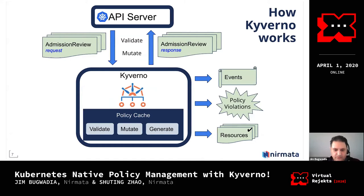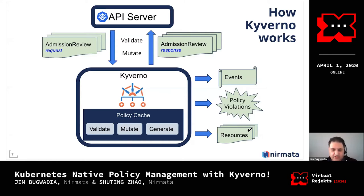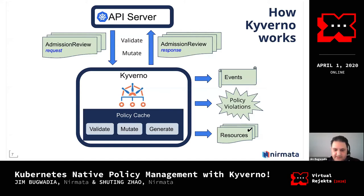These rules can either validate configs — and if you have enforce mode turned on, they will block configurations from being applied — or if the goal is to create violations and report them, that's done as a background operation for speed. Kyverno can also mutate and generate configs as required. It generates events on resources so the resource owner can clearly see what the policy has done, and it can also scan existing resources already in the cluster before a policy was applied.